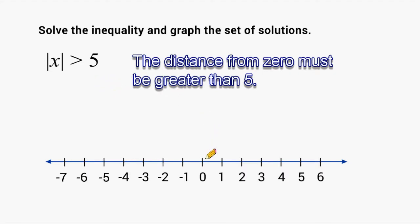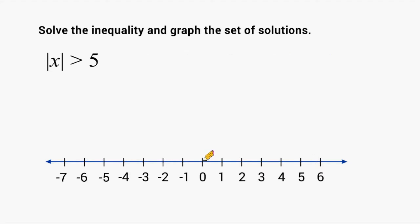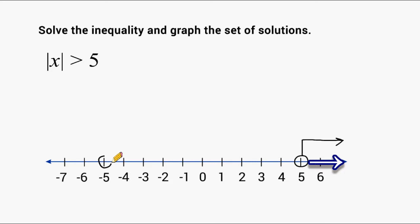If we take a look at our number line, here's 0. If we want a distance further away than 5, we can go 5 in this direction and mark that point — anything greater than that number is a greater distance from 0 than 5. We can also go to the left of 0 a distance of 5 and make a point, but we cannot shade it in because we want values a greater distance than 5 from 0. Anything to the left of negative 5 is a greater distance away from 0 than 5. This is how our solution set looks after graphing it.